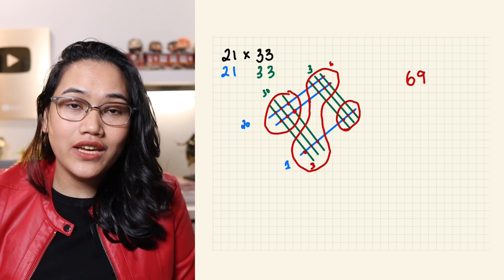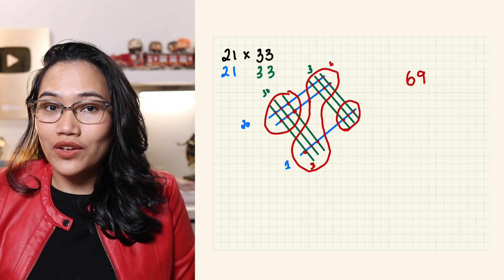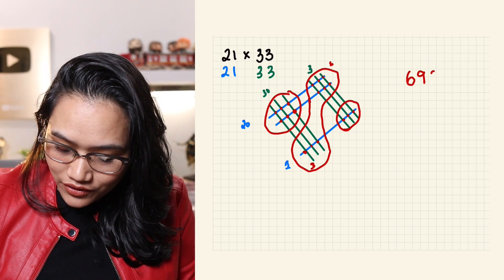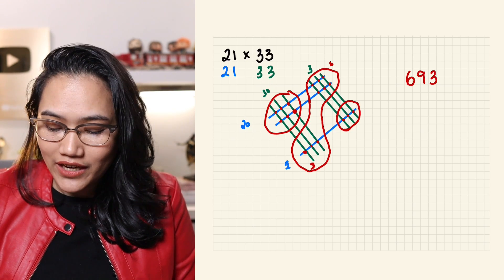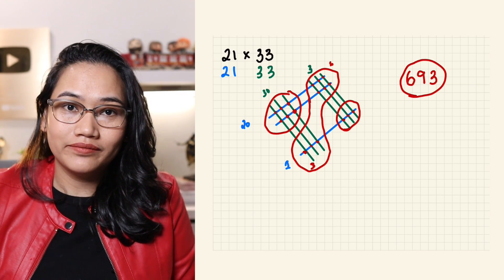1, 2, 3 intersections. So, the last digit would be 3. 693 is our final answer.